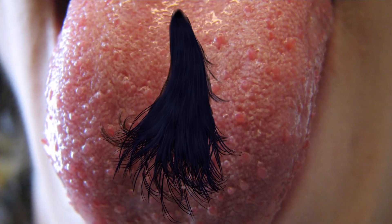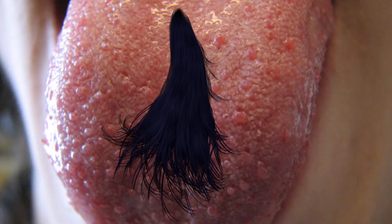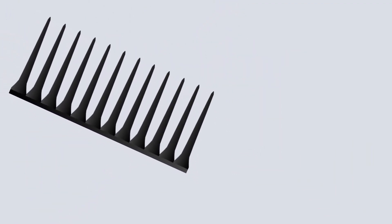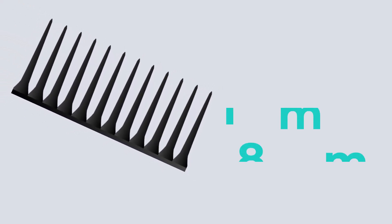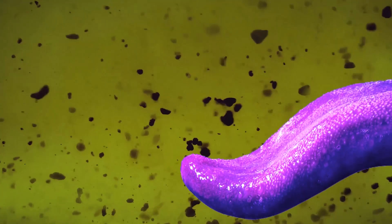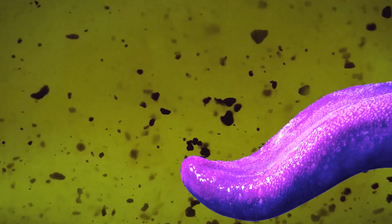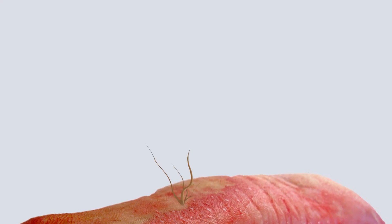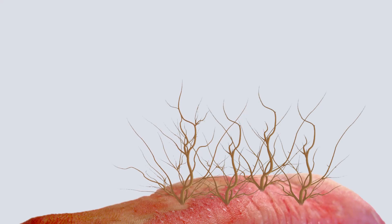For people with hairy tongue, the filiform papillae grow longer instead of falling off. They may become as long as 18 mm. As they grow, the papillae begin collecting debris like bacteria and food. The foods that you eat and the products that you put in your mouth can also discolor the filiform papillae, eventually giving the tongue an abnormal discoloration. So when the filiform papillae grow abnormally long, they give a hair-like appearance to the tongue — hence the name hairy tongue.